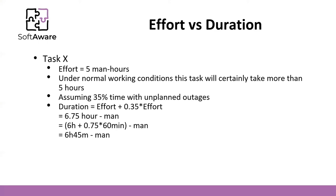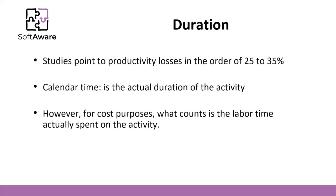In week one, two hours; week two, two hours; week three, two hours; then 45 minutes remaining. You would tell your customer the duration is almost four weeks, while the actual effort is five hours. This reflects predictive productivity losses of 25 to 35%, which is why the 35% value is used.